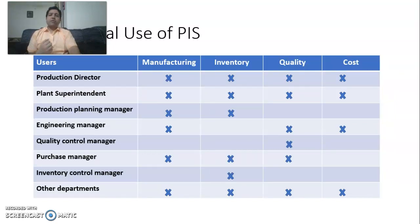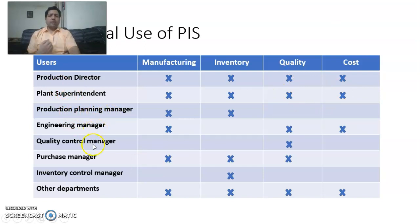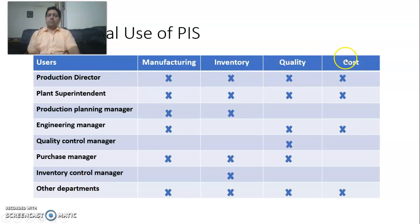Regarding the managerial use of production information system, there are different users: production director, plant superintendent, production planning managers, engineering managers, quality control managers, purchase managers, inventory control managers, and other departments. They all use information provided by the manufacturing subsystem, inventory subsystem, quality subsystem, and cost subsystem.